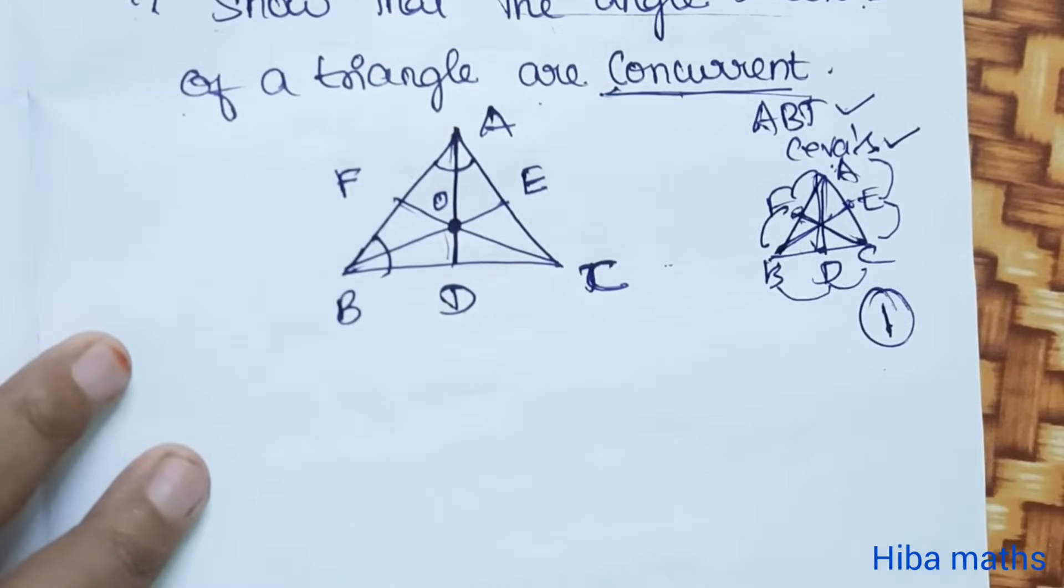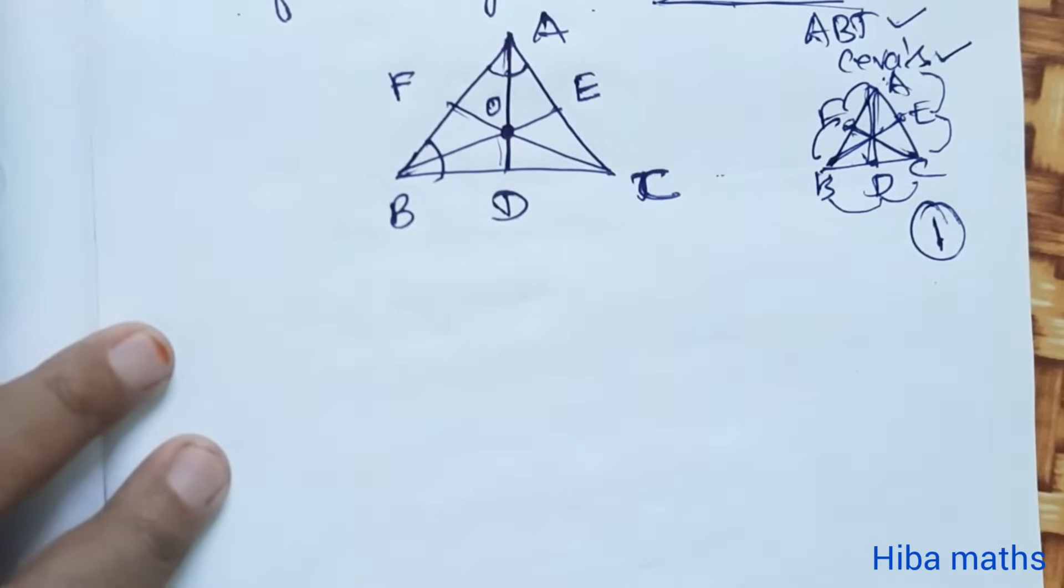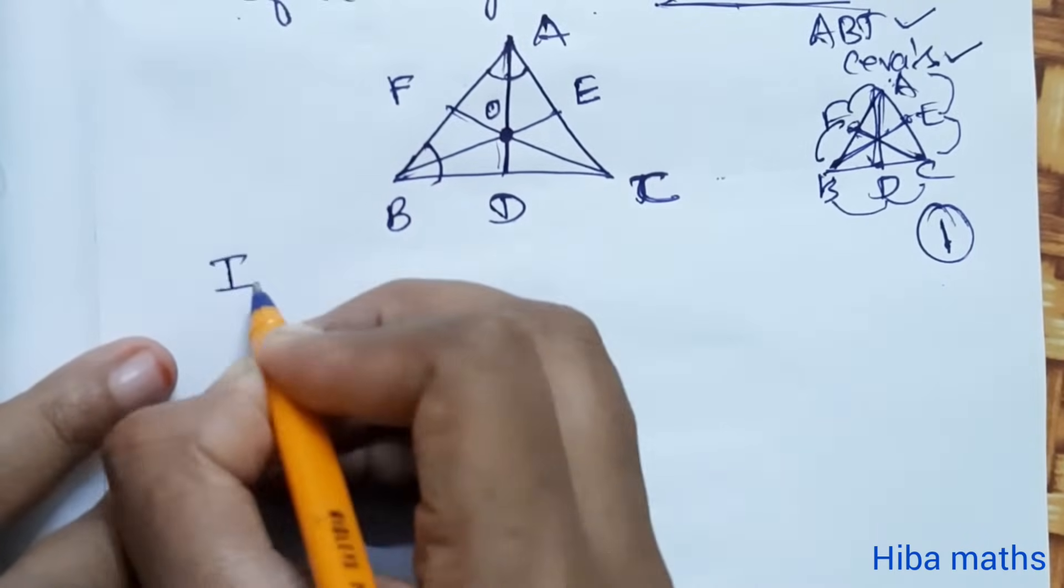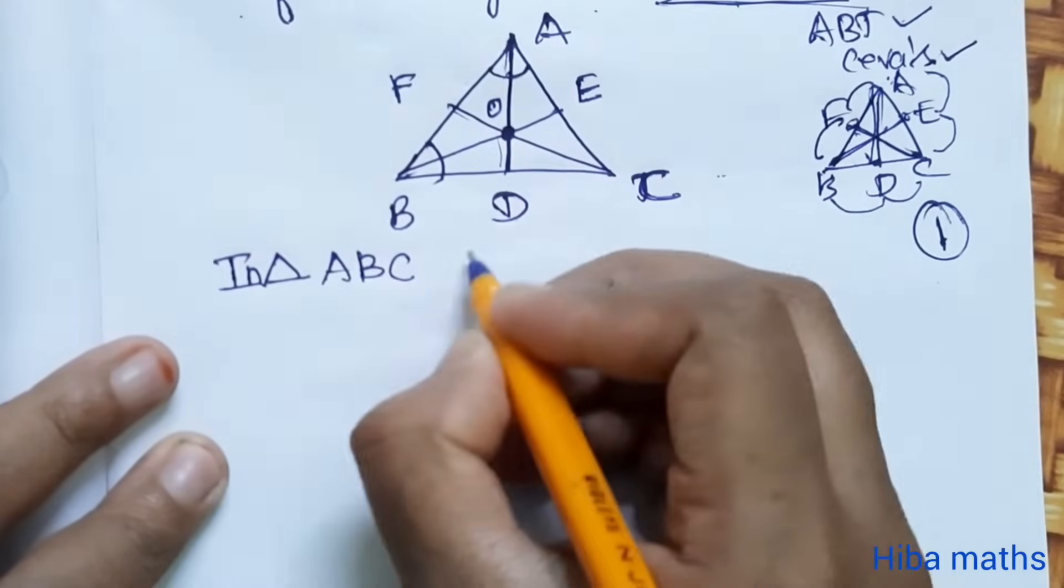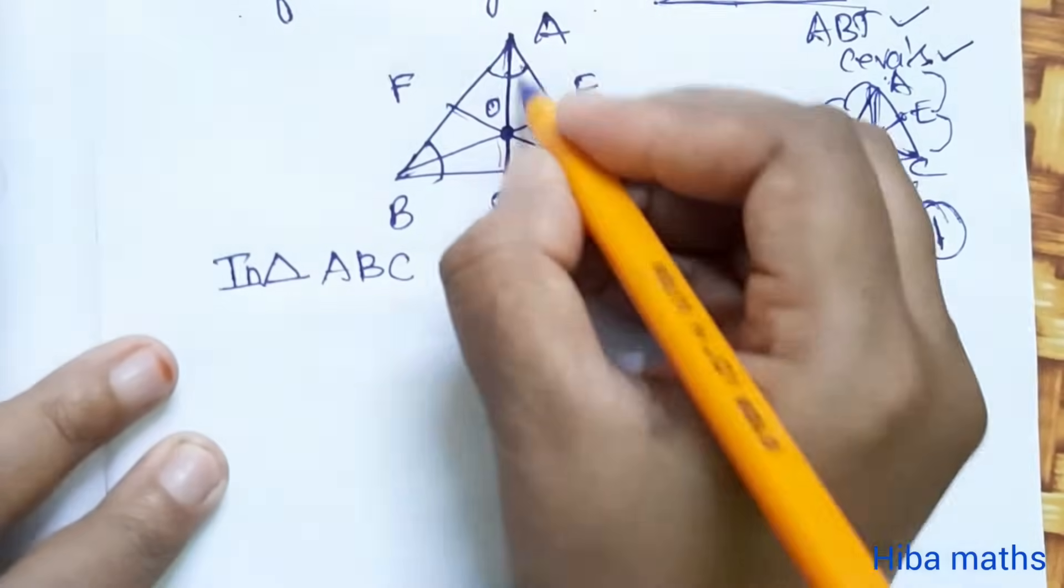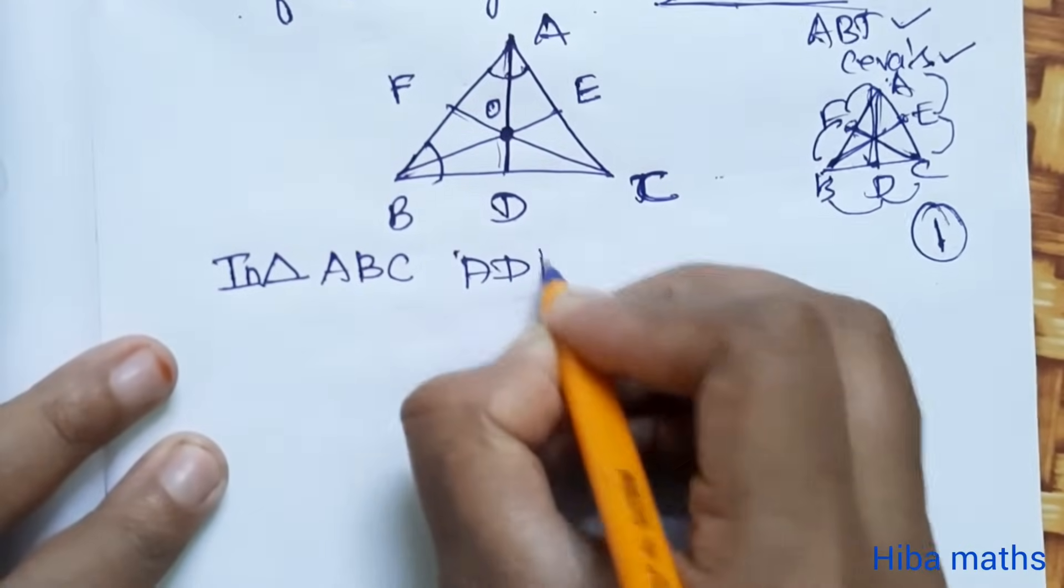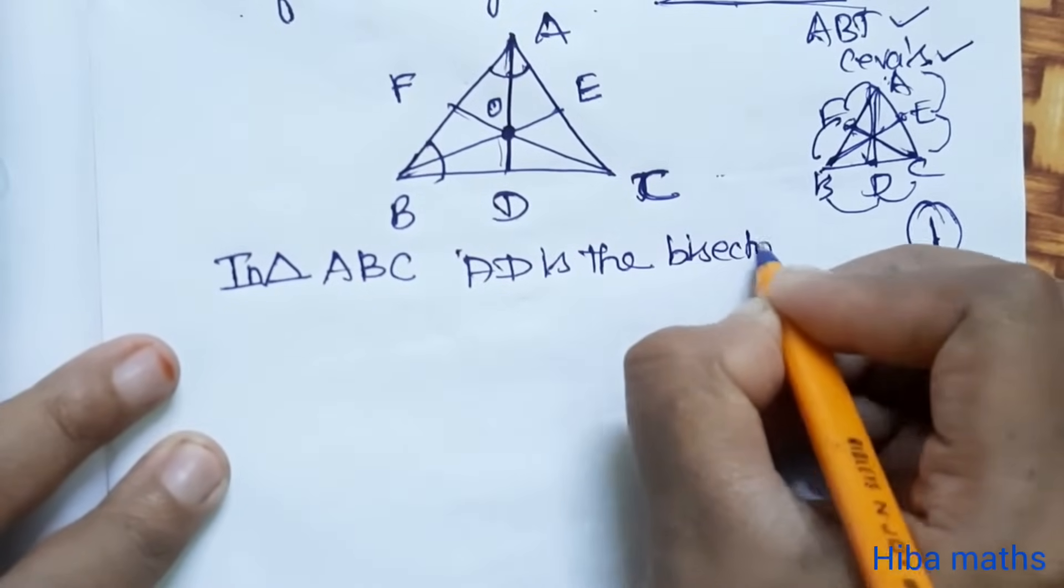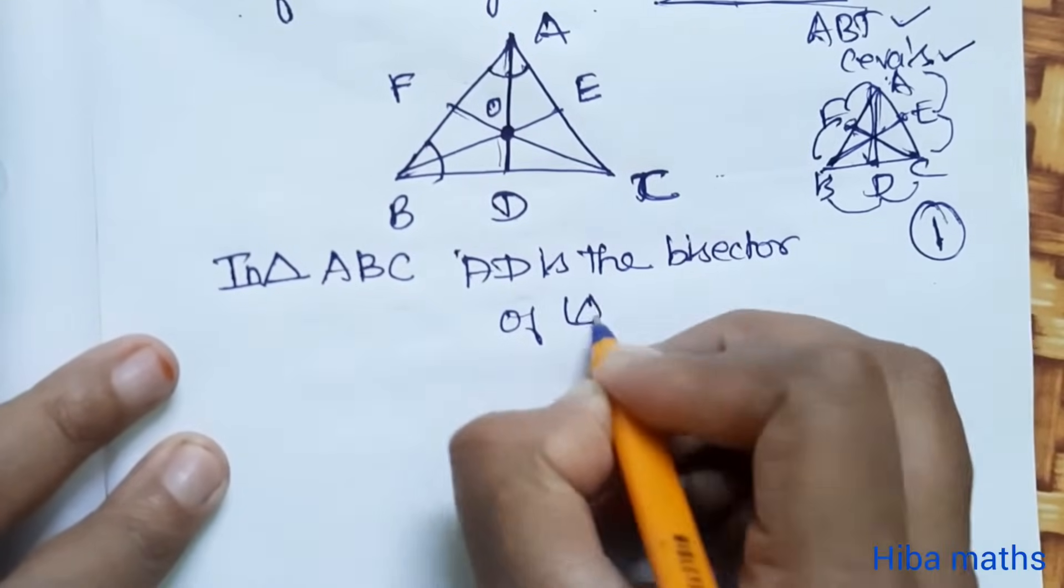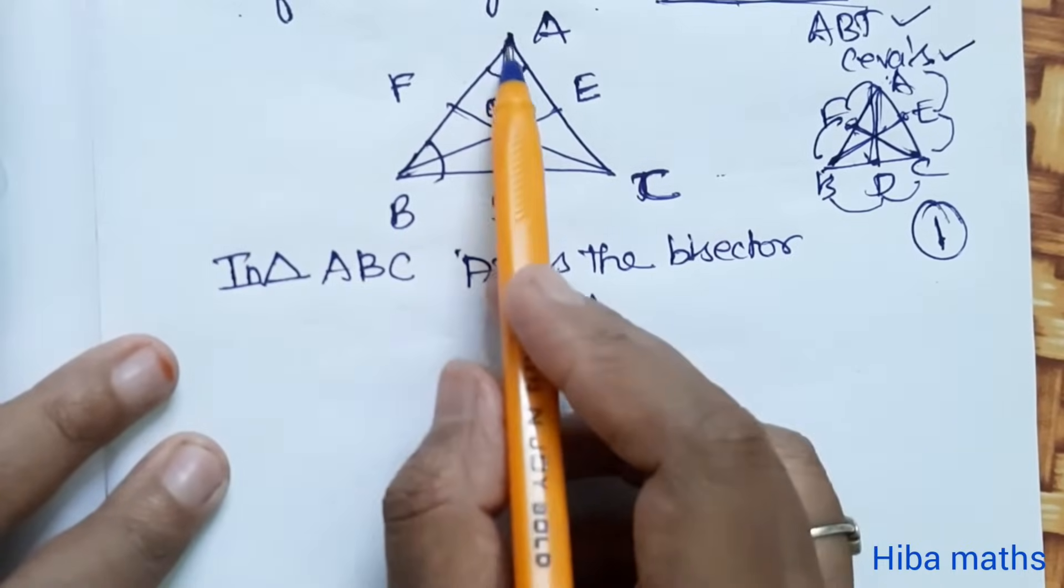In this triangle ABC, AD is the bisector of angle A. If we look at this triangle, we prove AD is angle bisector.